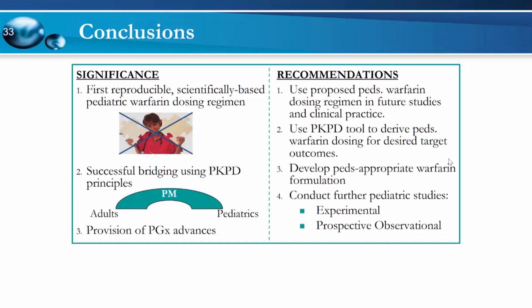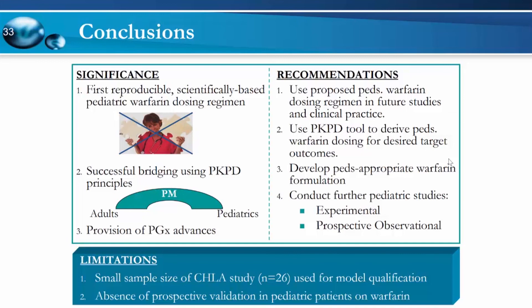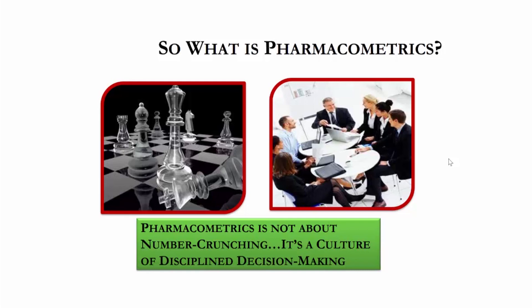In conclusion, this is to our best knowledge the first reproducible scientifically-based pediatric warfarin dosing regimen, demonstrating successful use of prior information bridging from adults to pediatrics. Mechanistic models allow using prior data efficiently — a p-value has no carrier of knowledge, whereas mechanistic models do. We took advantage of pharmacogenomic advances, and the proposed dosing should be studied in a clinical trial, along with development of a pediatric-friendly formulation if possible. In essence, pharmacometrics is not about number crunching — it's a culture of disciplined decision-making. You take all available information and make the best use of it to guide the next research. Sometimes you do not have to do clinical trials again; I would go with these recommendations to treat a pediatric patient because I have confidence in the PKPD of warfarin and the knowledge accrued. Thank you very much.